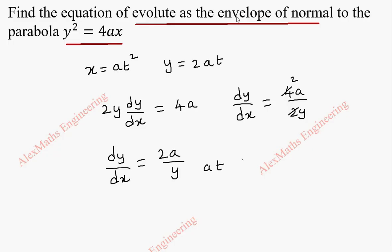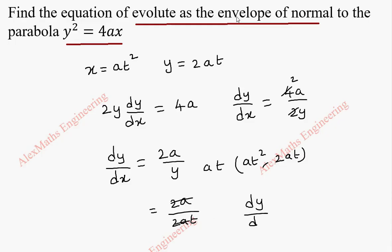Now, at the point (at², 2at), we substitute for y. Since y = 2at, after cancelling we get dy/dx = 2a/(2at) = 1/t. So dy/dx = 1/t.